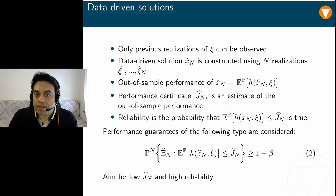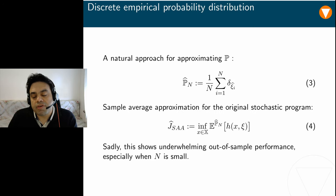We thus pursue a more modest but achievable goal to find a data-driven solution with a low certificate Ĵₙ and a high probability 1-β. A natural approach to generate data-driven solutions at x̂ₙ is to approximate the distribution P with a discrete empirical probability distribution P̂ₙ, which is a discrete distribution supported uniformly on our available training data set. This leads to approximating the original stochastic program with a sample average approximation problem, or in short, SAA.